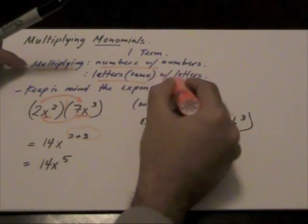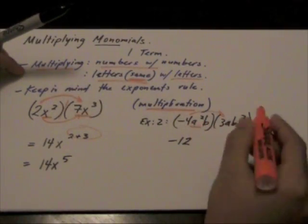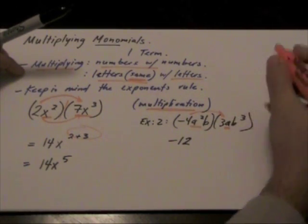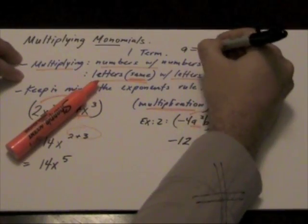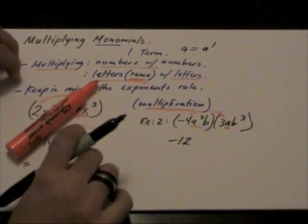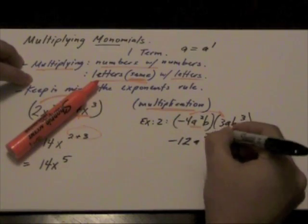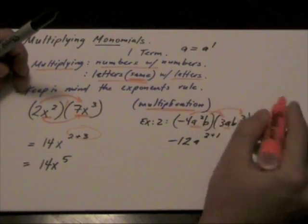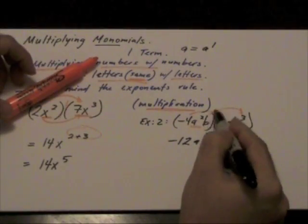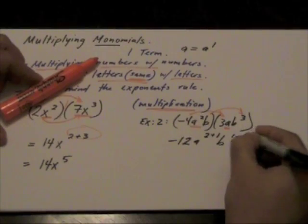Now, letters with letters, again, keep in mind that they're same letters. So a squared times just a. Keep in mind, whenever you just have the variable, if you see the letter a, it means a to the power of 1. So we have a, and we're adding 2 plus 1. Then we have our b value that we are multiplying together. So b to the power of 1 times b to the power of 3 will give us b, 1 plus 3.